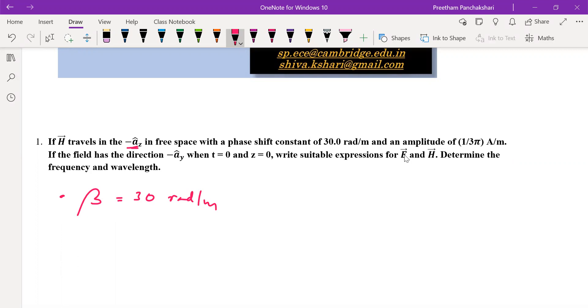The phase shift constant and an amplitude, that means amplitude of H, let us say Hm is 1 by 3π amps per meter. And if the field has the direction of minus a field, means which field? H field. That is the direction of magnetic field. Direction of magnetic field is minus Ay cap.